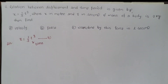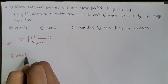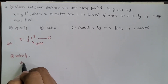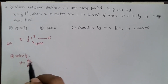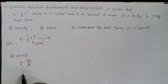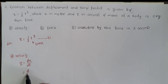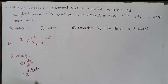First, calculate the velocity. As you know, velocity is the rate of change of displacement — that is, v = dx/dt. Here x is displacement, so we take the derivative of x with respect to time. Substituting x = (1/3)t³, we take the constant (1/3) outside and differentiate t³ with respect to t.